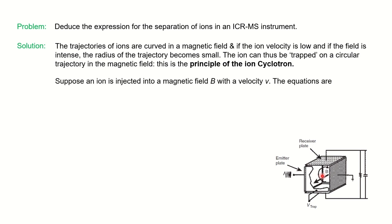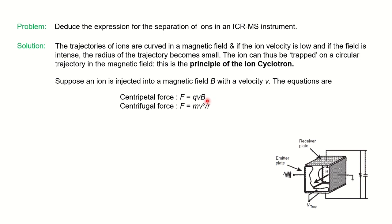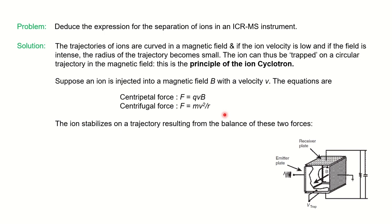Now for the derivation, assume that an ion is injected in the magnetic field B with velocity v. The equations applied here are: centripetal force F = qvB, where q is charge, v is velocity, and B is magnetic field; and centrifugal force F = mv²/r, where m is mass and r is the radius. The ion stabilizes on a trajectory resulting from the balancing of these two forces.